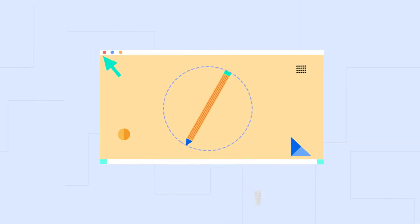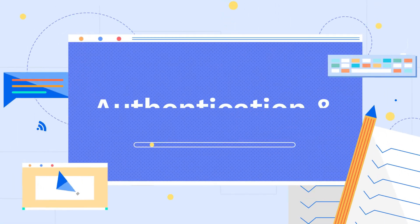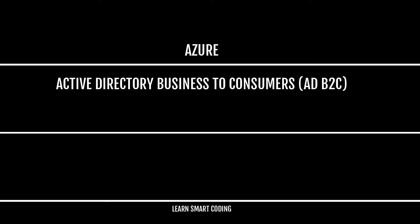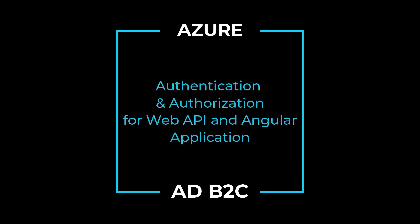Hello friends, welcome back to my channel Learn Smart Coding. This is Karthik, thanks for joining me today. In this video, I'm going to cover how to add the authentication and authorization part in your Angular application, using Azure Active Directory Business to Consumer — in short form, Azure AD B2C. We will go through the Azure AD B2C concepts and also see how to do the app registration and configure these things in your Web API and Angular application.